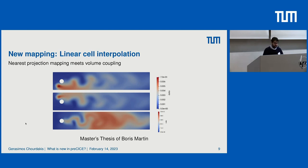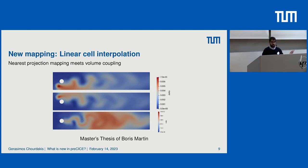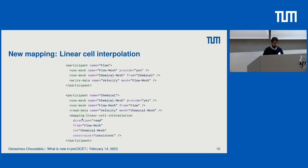There is a new tutorial demonstrating this feature called Channel Transport with Chemical Reaction. You have two channel flows around a cylinder with two species, Compound A and Compound B. You leave them at an initial position and get a reaction that takes both into account. Configuration is very similar to every other mapping — you define participants and specify Linear Cell Interpolation, which gives a direction from-to, and it is possible both in a consistent and conservative manner.